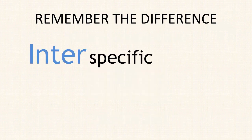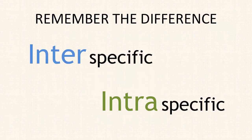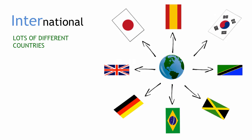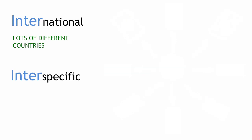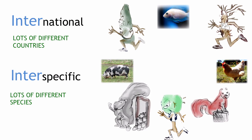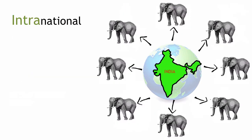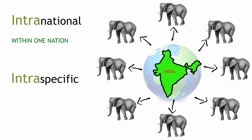To remember the difference between inter-specific and intra-specific interactions, remember that international means between lots of different countries, so inter-specific interactions are between lots of different species. Intra-national would be within one nation, and similarly intra-specific interactions involve members of one species.